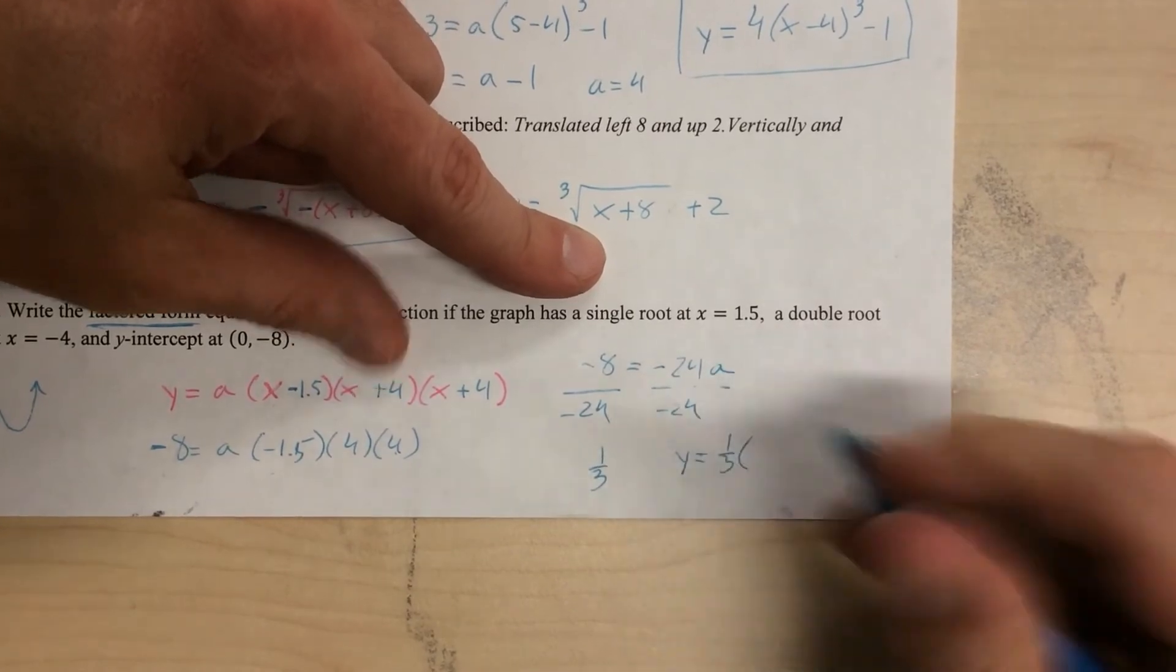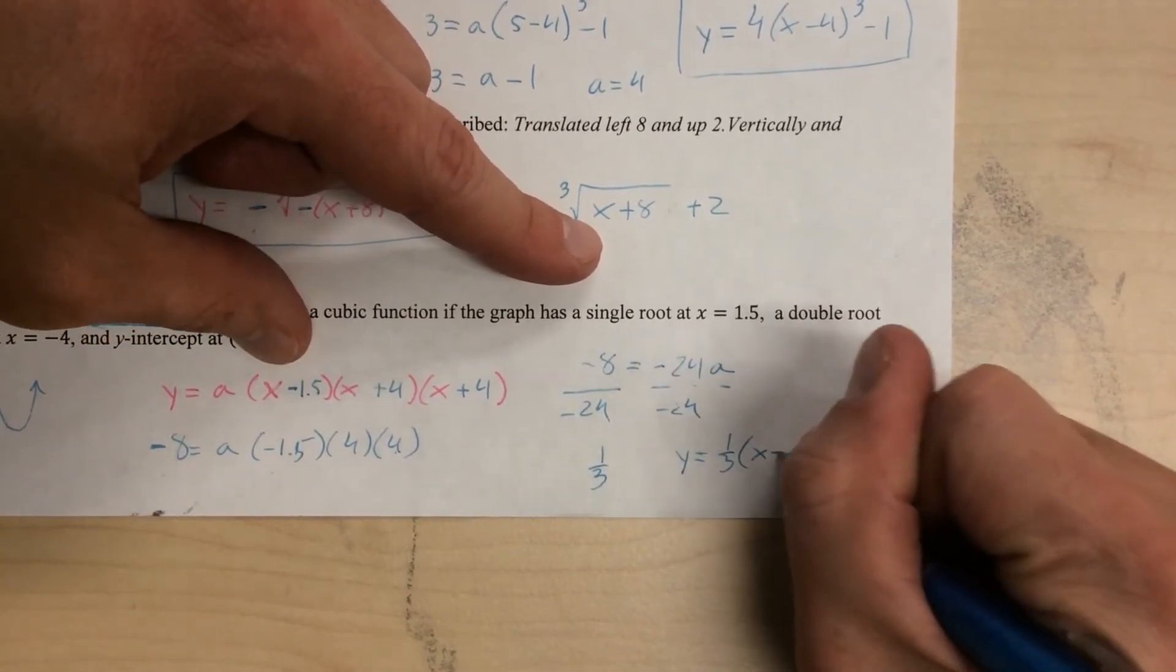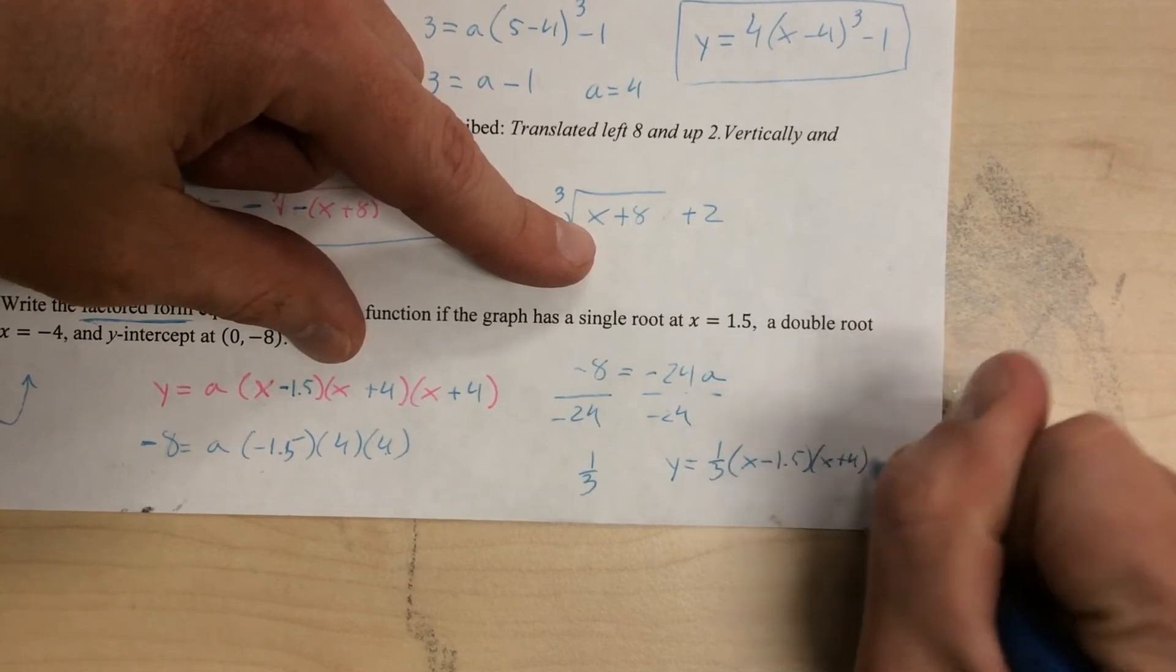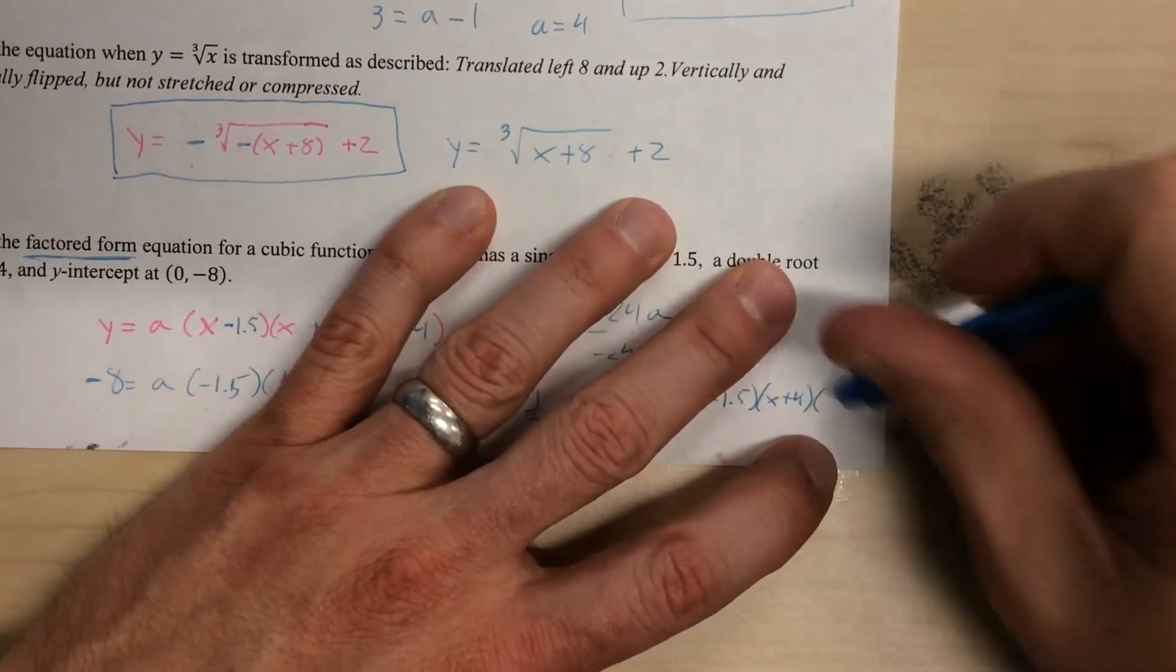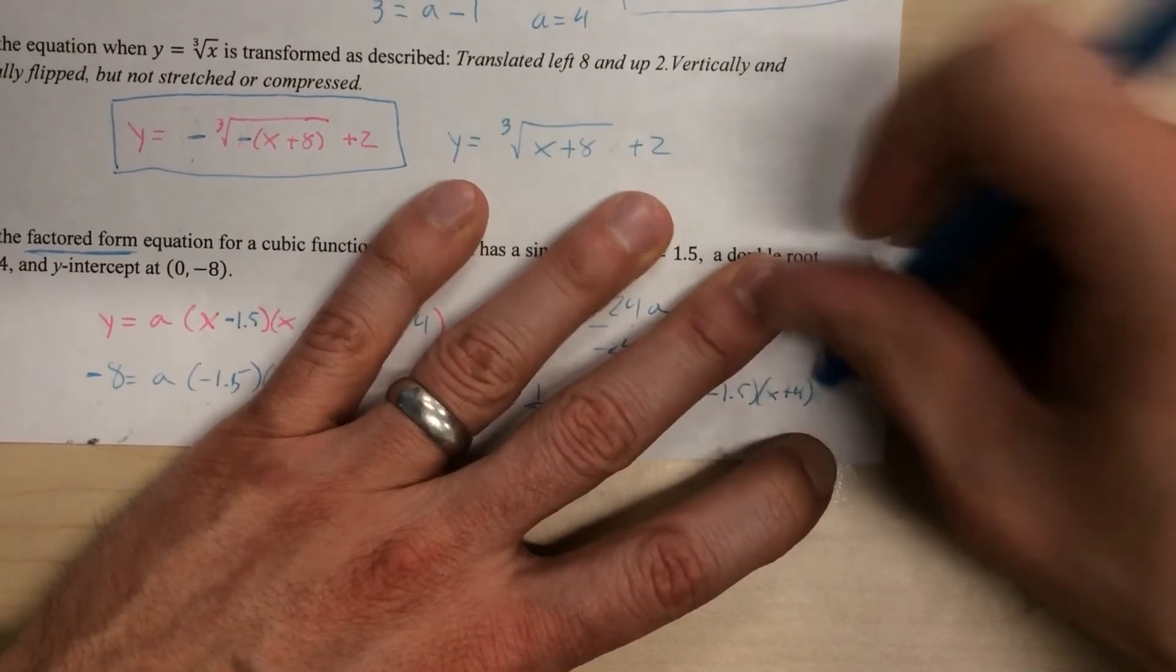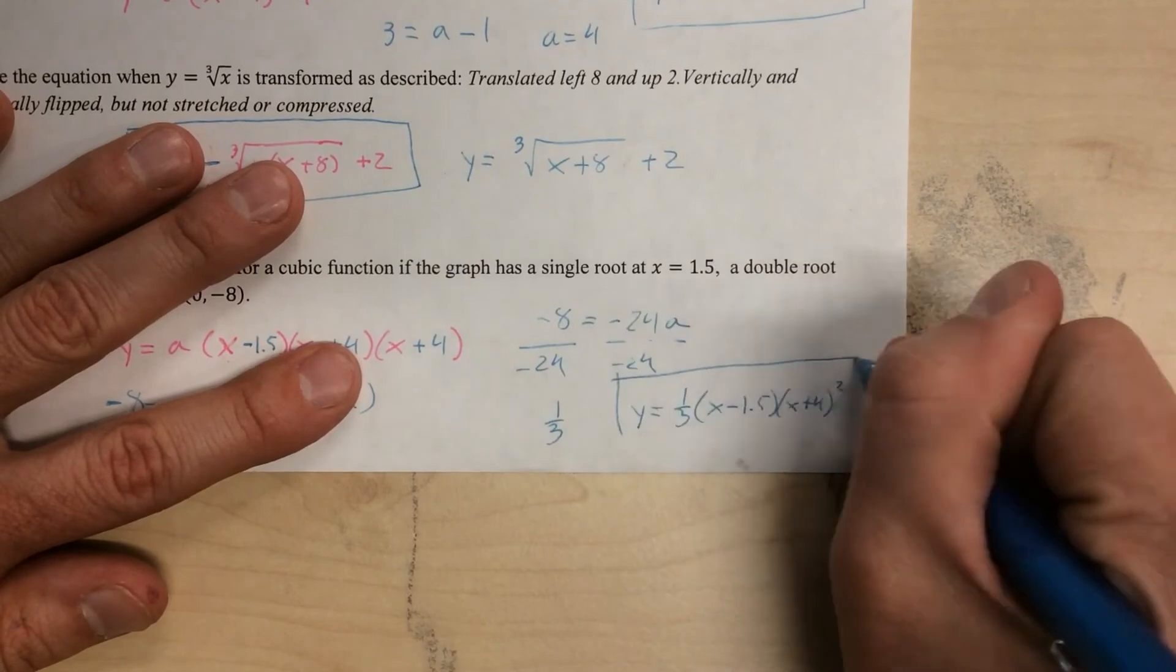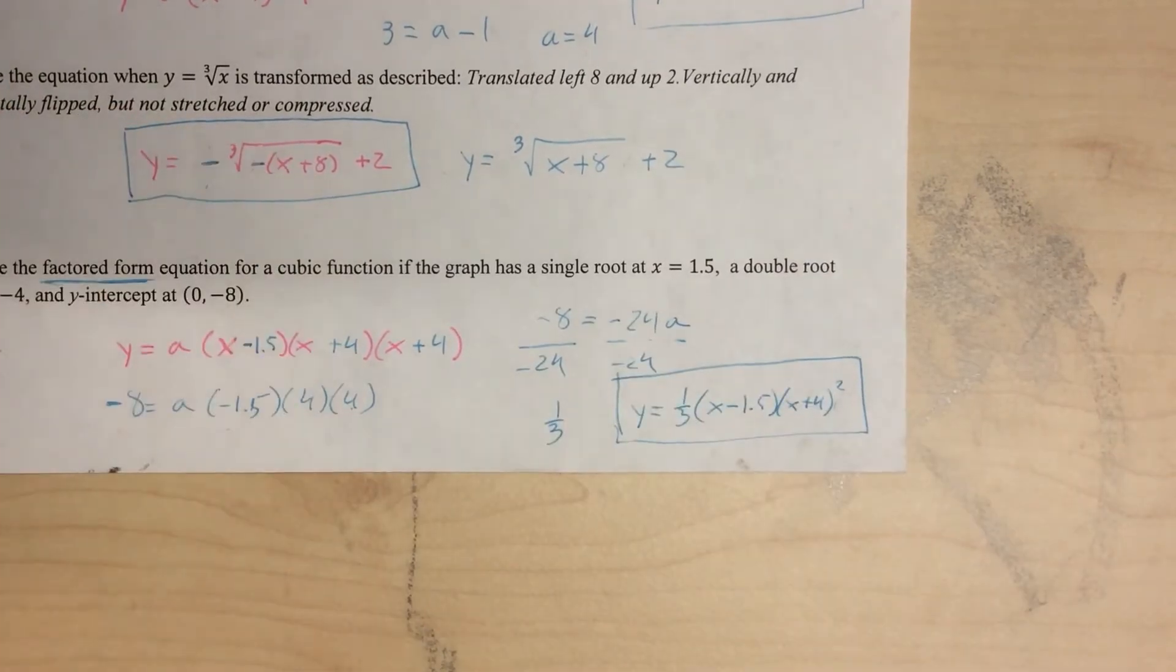Let me see if I can pull it all together here and make it look nice. The a-value is going to be one-third. Then you just rewrite all these parentheses that you've got. And you know what? If you want to look real cool, just put a little two right there. That's great.